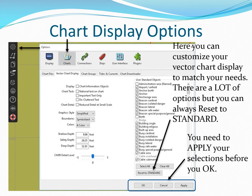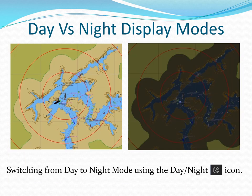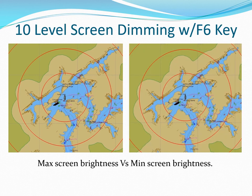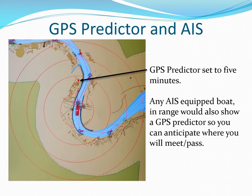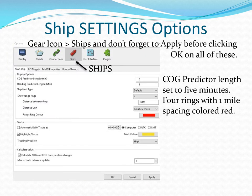You can always experiment with different display options and return to base or standard at any time. OpenCPN can switch your computer display to a darker format for nighttime operation. The F6 key dims the display brightness in steps. Course up and look ahead allow you to see more in front of you along your course. The GPS speed predictor shows where you and any AIS targets will be in the number of minutes that you entered. The ship's icon lets you set your ship's orientation.